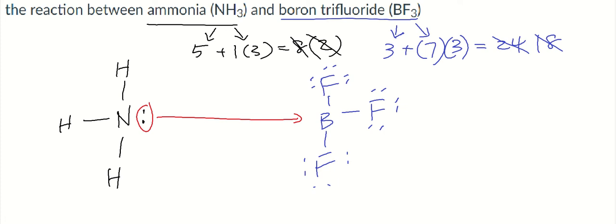So let me redraw this. Sometimes you'll see an arrow there to indicate that that covalent bond is formed using the two electrons originally from nitrogen.